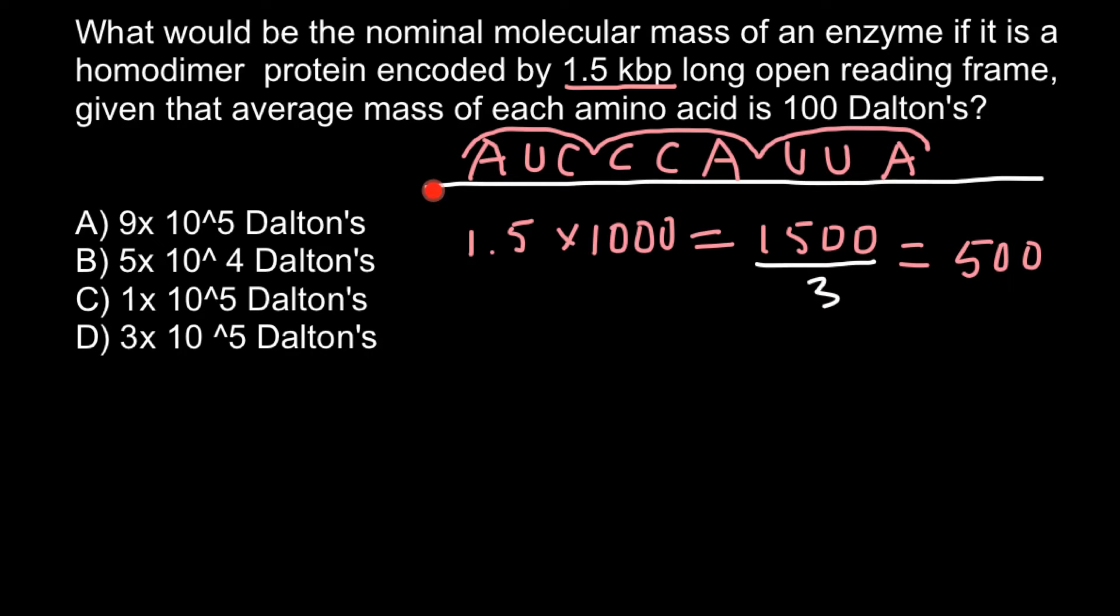Now we know that messenger RNA that has 1500 nucleotides codes for 500 amino acids. This is not the end of our calculations. To find the weight, we have to multiply 500 amino acids by 100 daltons to find the weight of the protein chain. Multiply by 100 and the weight would be 50,000 daltons.